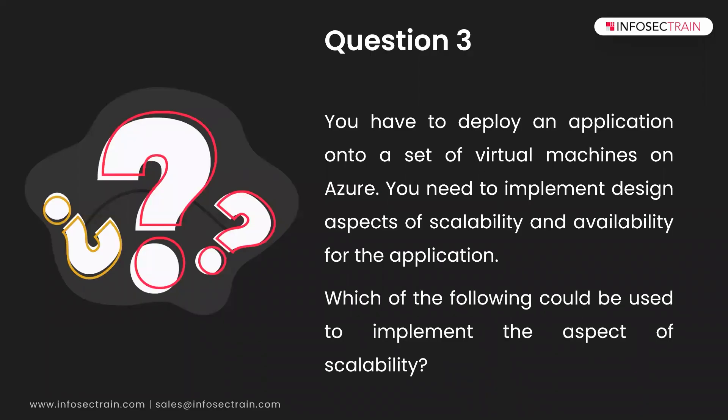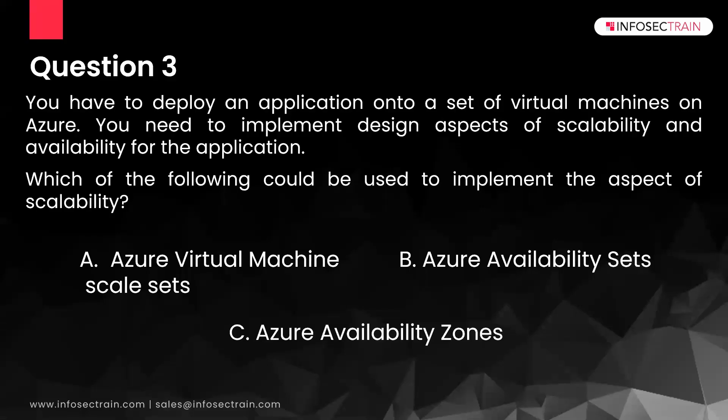Question three: you have to deploy an application onto a set of virtual machines on Azure. You need to implement design aspects of scalability and availability. Which of the following could be used to implement the aspect of scalability? The options are: A) Azure Virtual Machine Scale Set, B) Azure Availability Sets, and C) Azure Availability Zone.